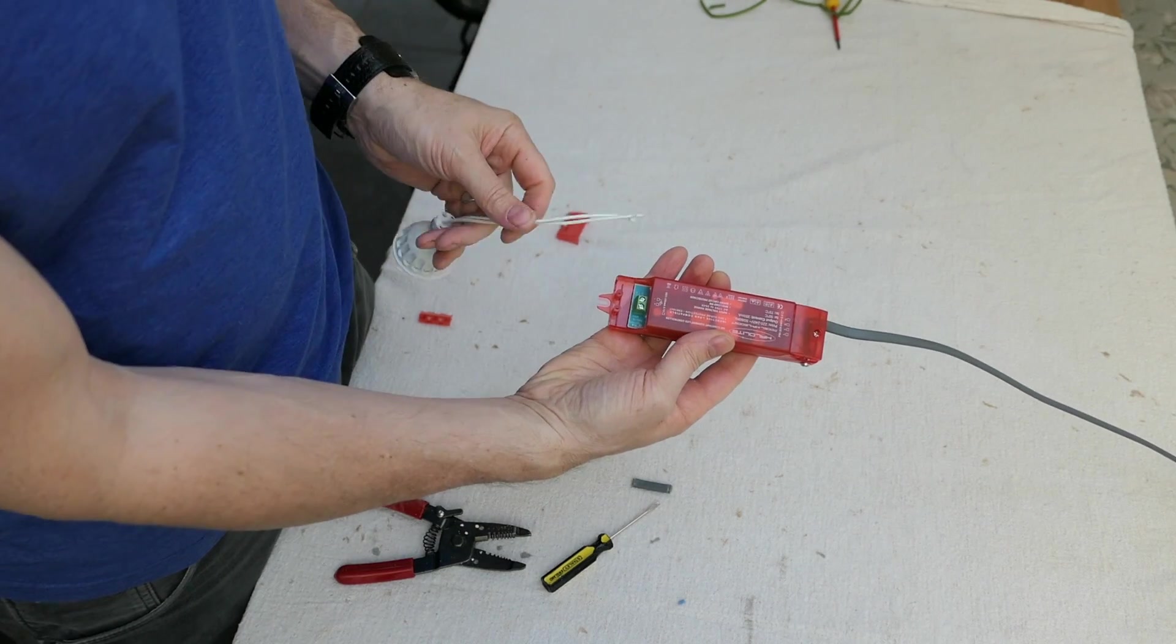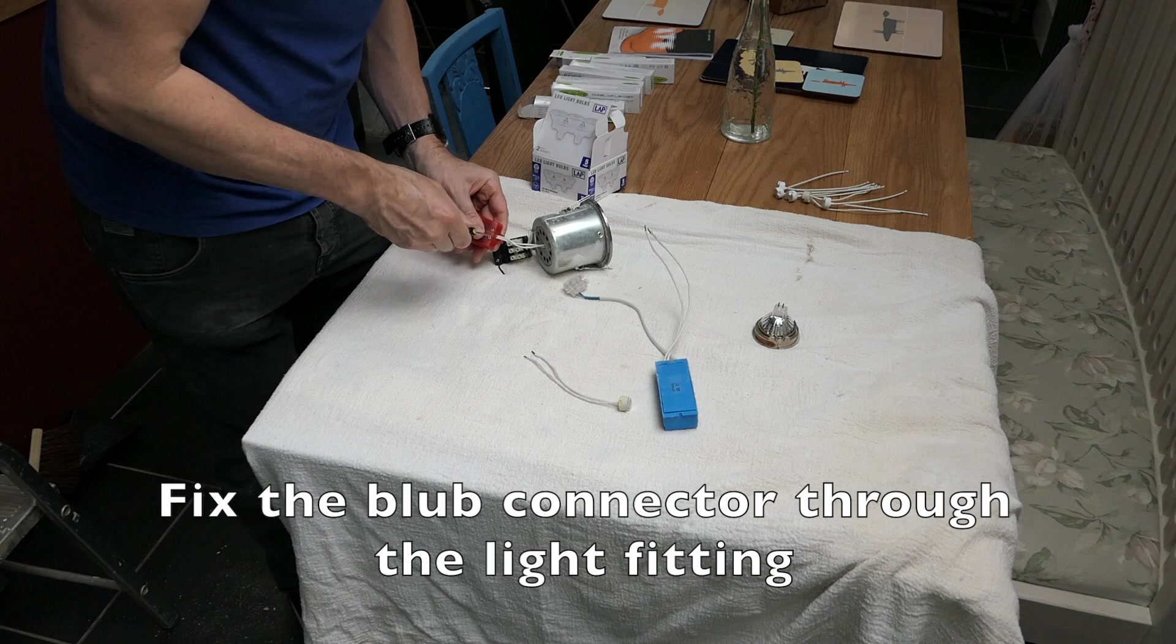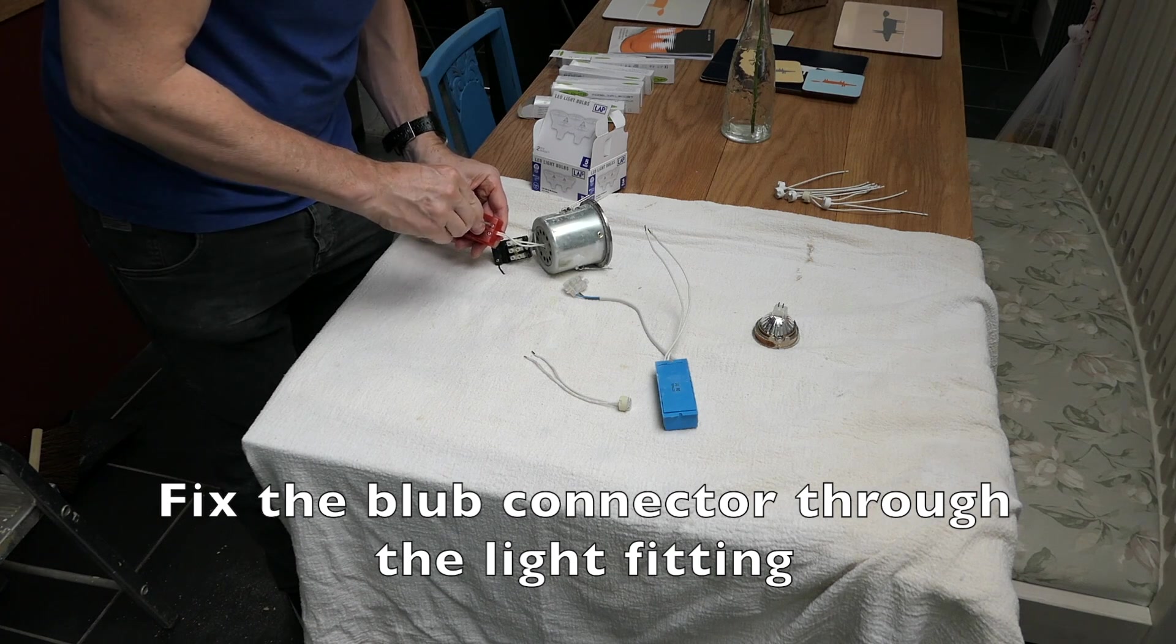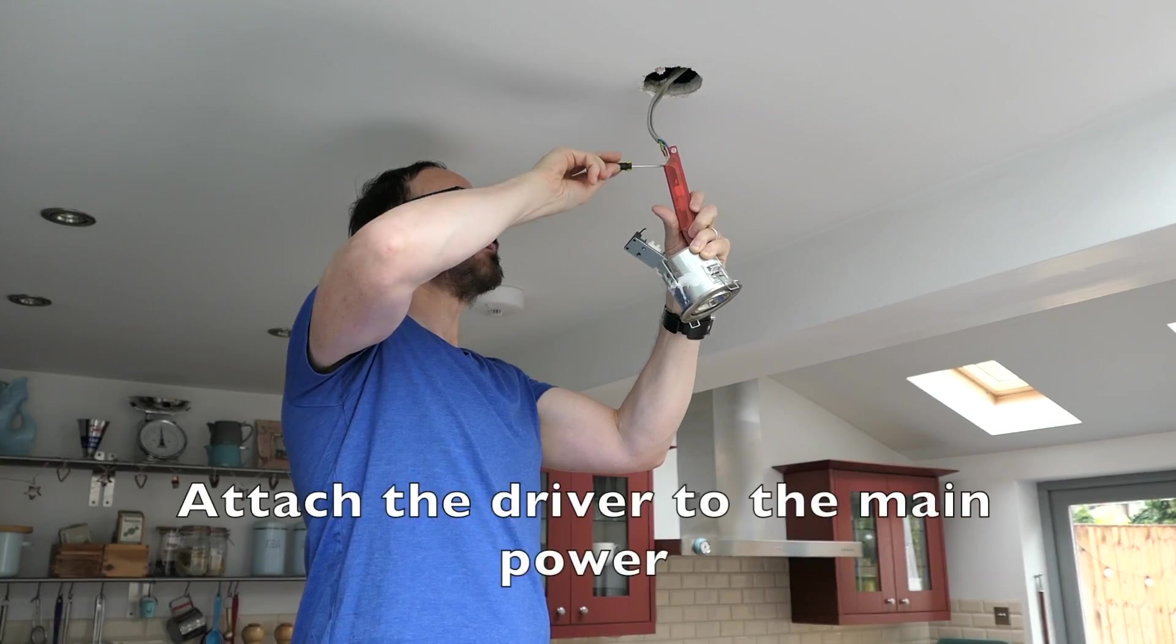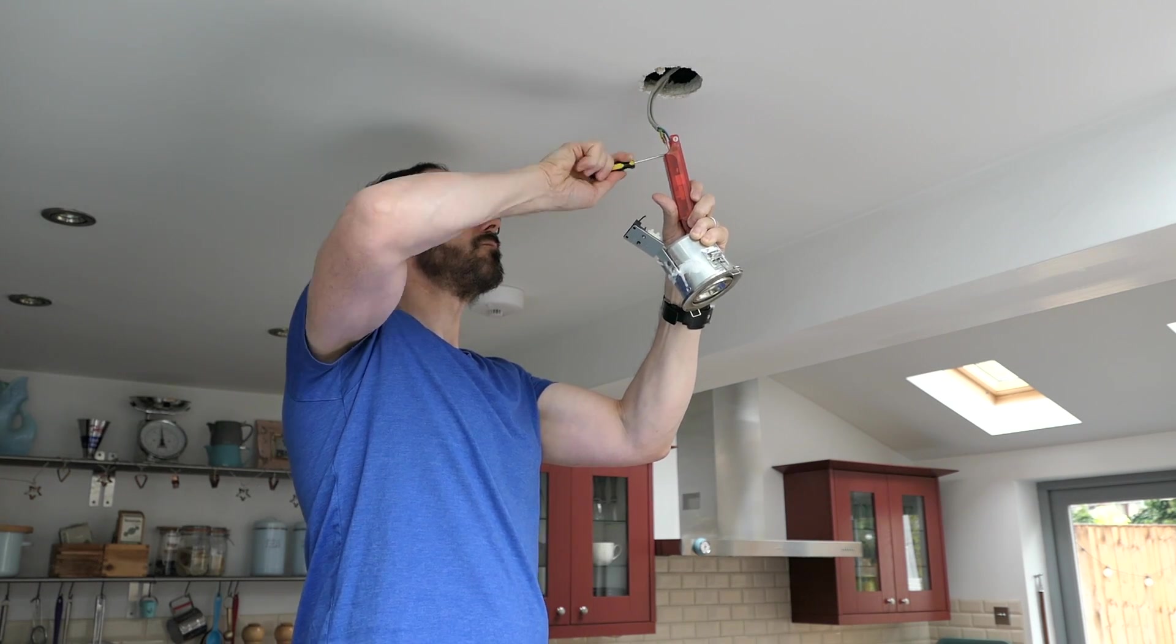The lamp connector attaches to the other end. The lamp connector goes through your old unit. It is easier to prepare this on the table before you go up your ladder. Then fix this to the power supply as shown earlier.